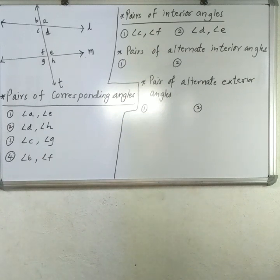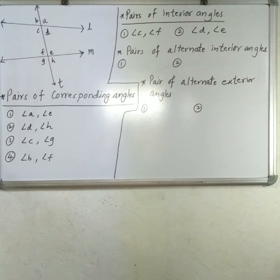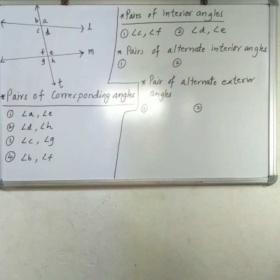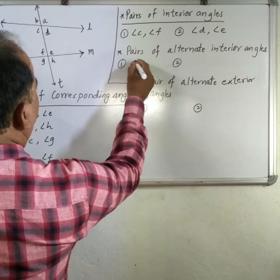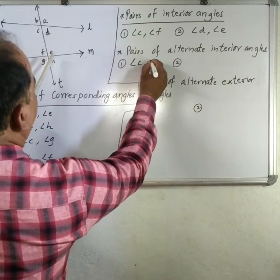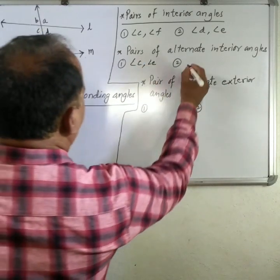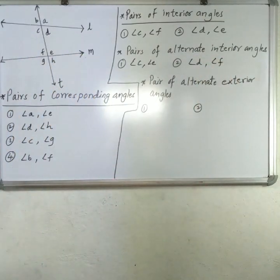Next are pairs of alternate angles. The pairs of alternate angles are on opposite sides of the transversal and their arms on the transversal show opposite directions. There are two types: alternate interior and alternate exterior angles. The first pair of alternate interior angles is angle C and angle E, and the second pair is angle D and angle F. Alternate exterior angles are angle B and angle H.